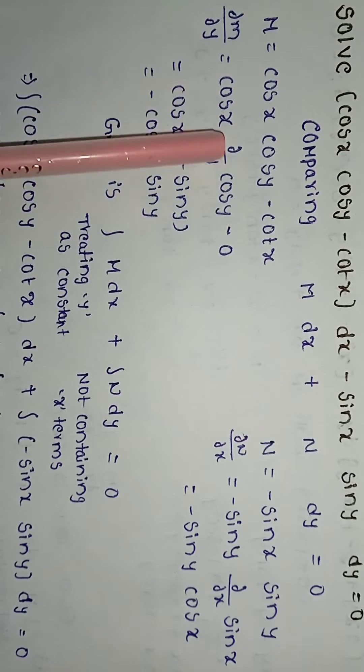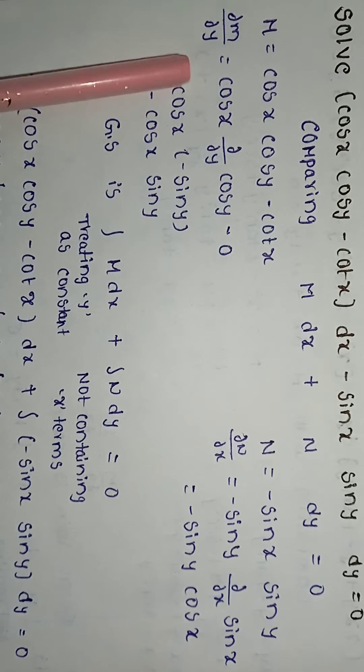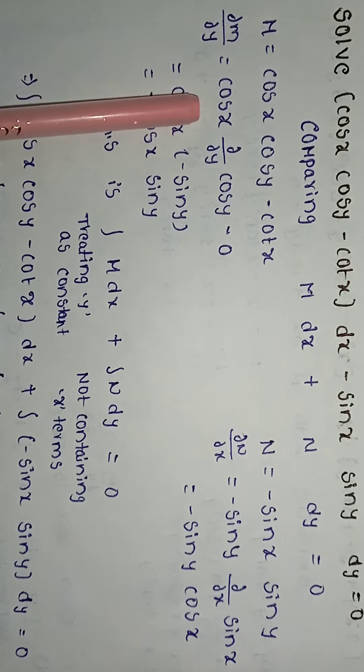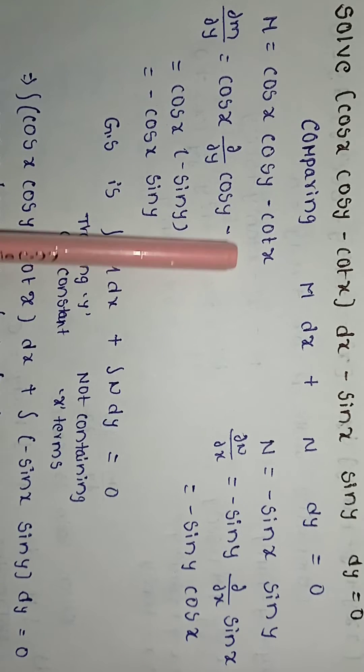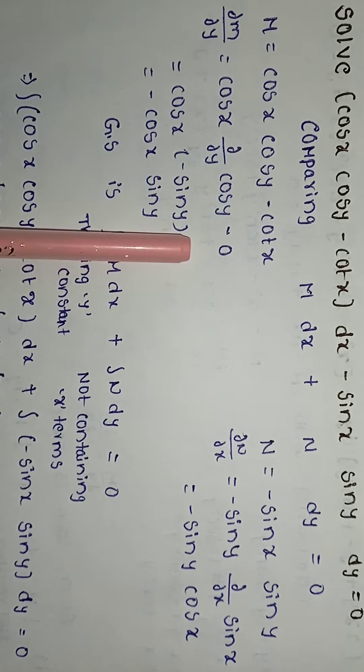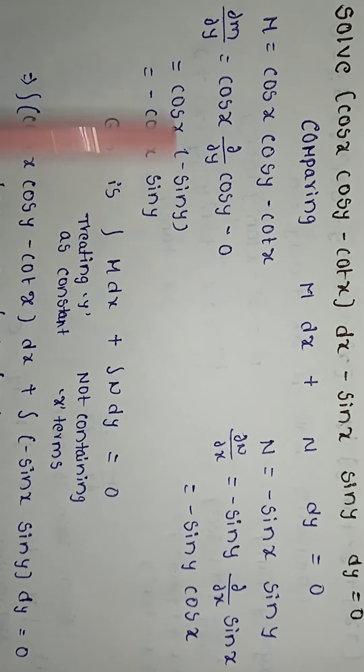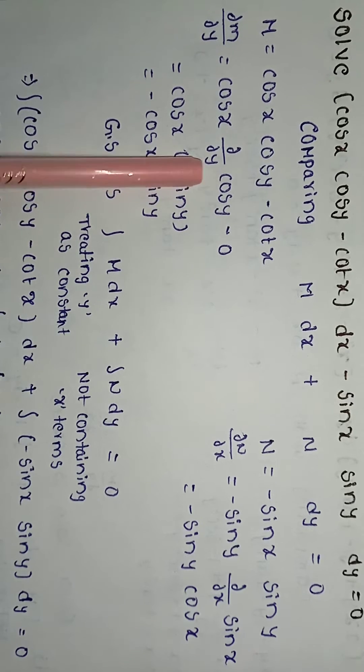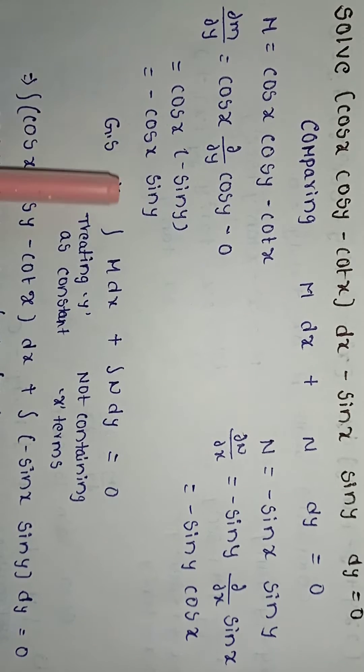m is equal to cos x cos y minus cot x. ∂m/∂y: with respect to y, x is constant. Derivative of cos y is minus sin y. Derivative of constant is 0. So we get minus cos x sin y.